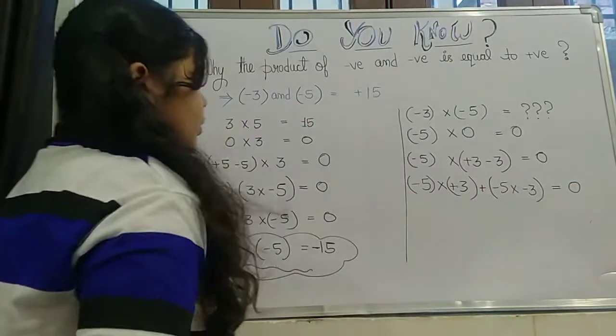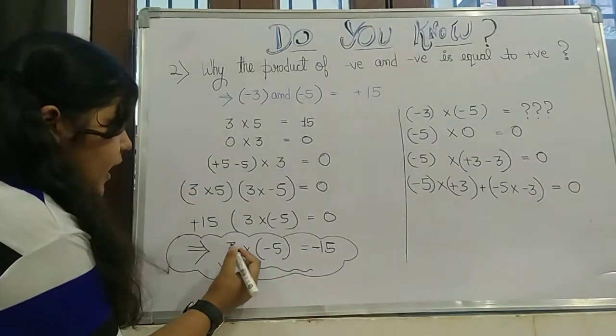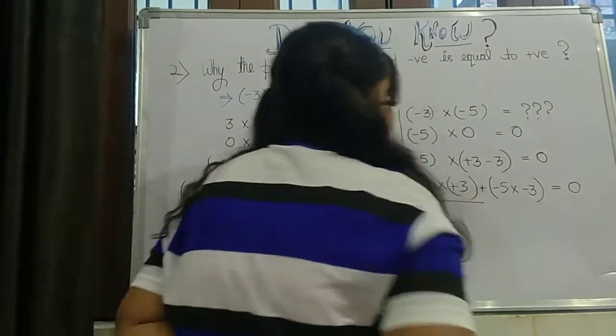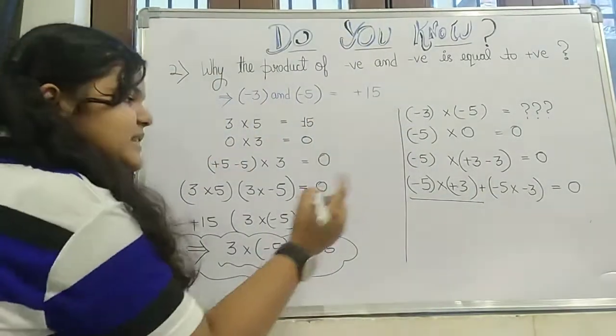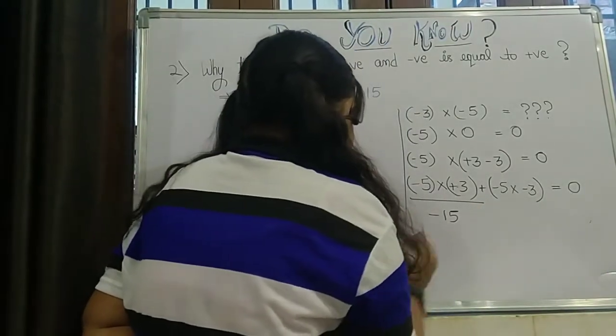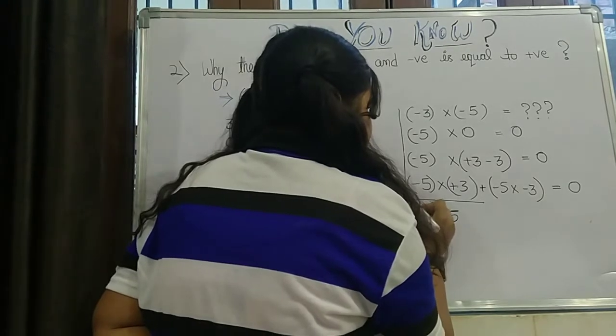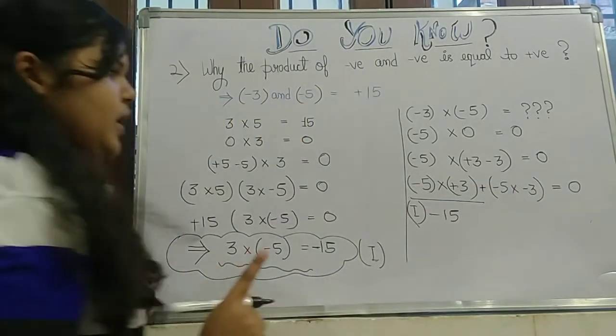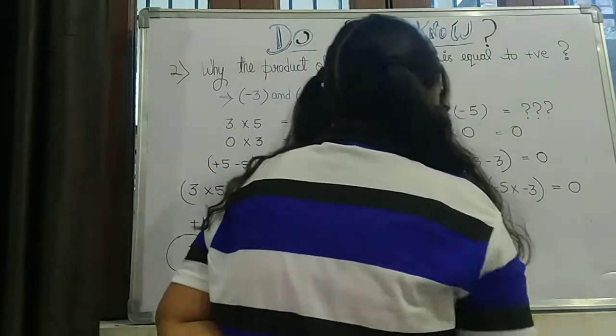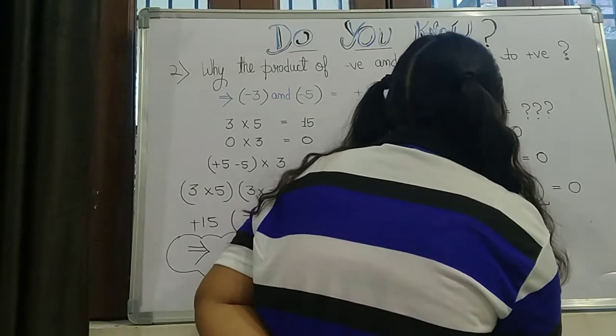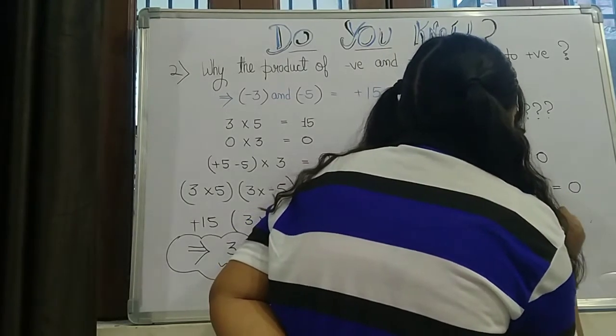Now here we know that we have found the value of 3 into minus 5. So here we can put the value of 3 into minus 5, that is negative 15. So from proof number 1, we have put the value minus 15 here for minus 5 into plus 3, then plus this equation whose answer we don't know: minus 5 into minus 3.